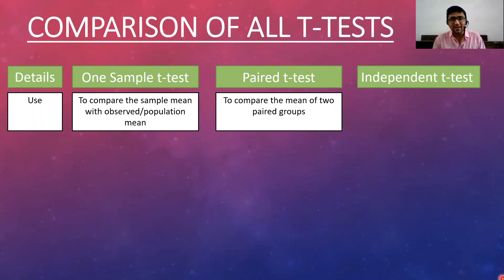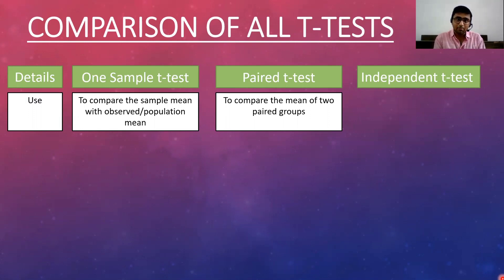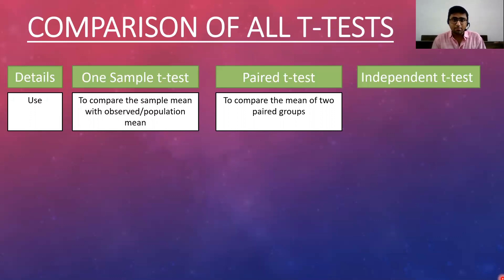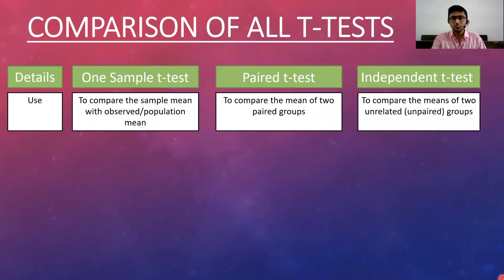For example, if we want to find the effectiveness of a training program on employee productivity, we collect data before and after the training program. The productivity before training makes a pair with the productivity after training. Similarly, a husband and wife, brother and sister, or twins can make paired groups. The independent T-test is used to compare the means of two unrelated or unpaired groups.